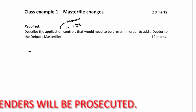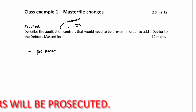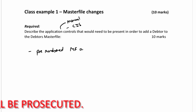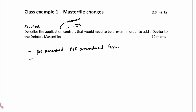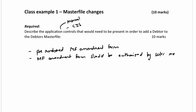The first manual control is to make sure that there is a pre-numbered master file amendment form. To make sure that it is valid, I need to ensure that it is authorized — so the master file amendment form should be authorized by a sales manager, because we're working with debtor data. Those are the manual controls ready.